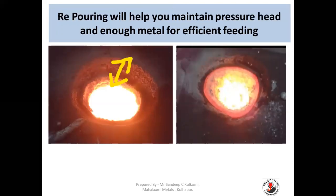Re-pouring will also help you maintain pressure head and enough metal for efficient feeding. You can see a picture where metal is well drained in the sleeve — you can re-pour such sleeves or feeders again to provide a new efficient metal stock for feeding. In the right picture you can see the same feeder being refed so that proper and efficient metal feeding is available for the casting.